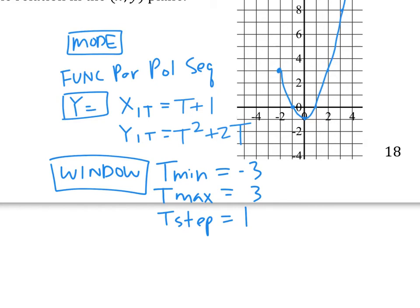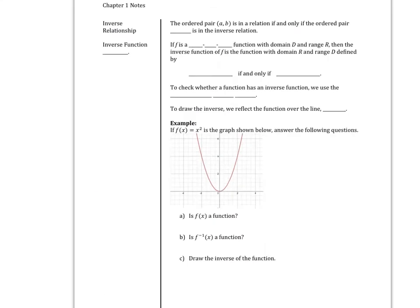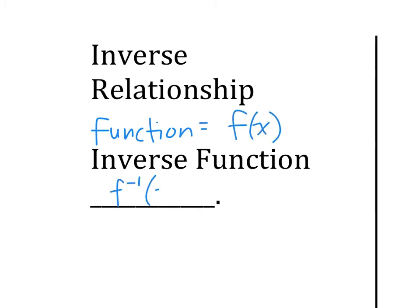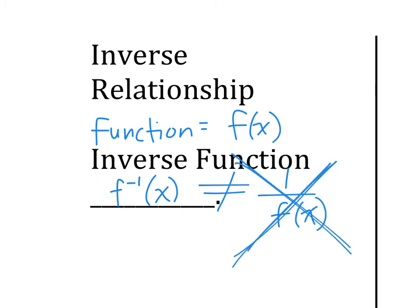That is a quick lesson about parametric equations. Now we're moving on to the next part, which is inverse. If you have a function - let's say the original function is f of x - the inverse function is f inverse of x. When you see that negative 1, that does not mean 1 over f of x.